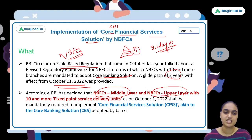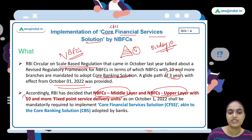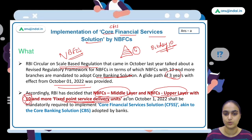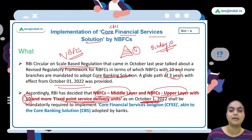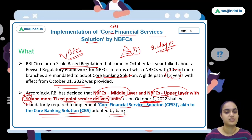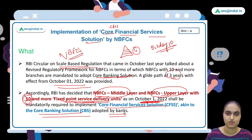In both NBFC middle layer and upper layer, if there are 10 or more fixed point service delivery units as on 1st October 2022, they need to mandatorily implement the Core Financial Services Solution — similar to the core banking solution which banks follow.